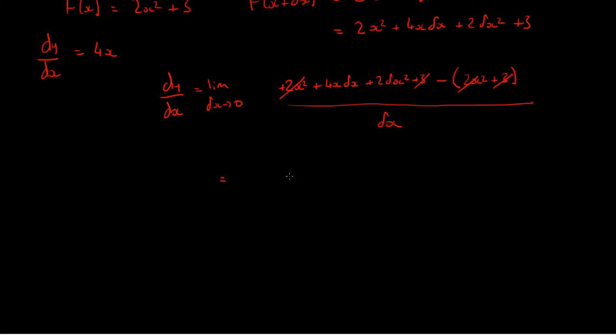So, what we end up with is 4x delta x plus 2 delta x squared divided by delta x. This is the limit as delta x tends to 0.